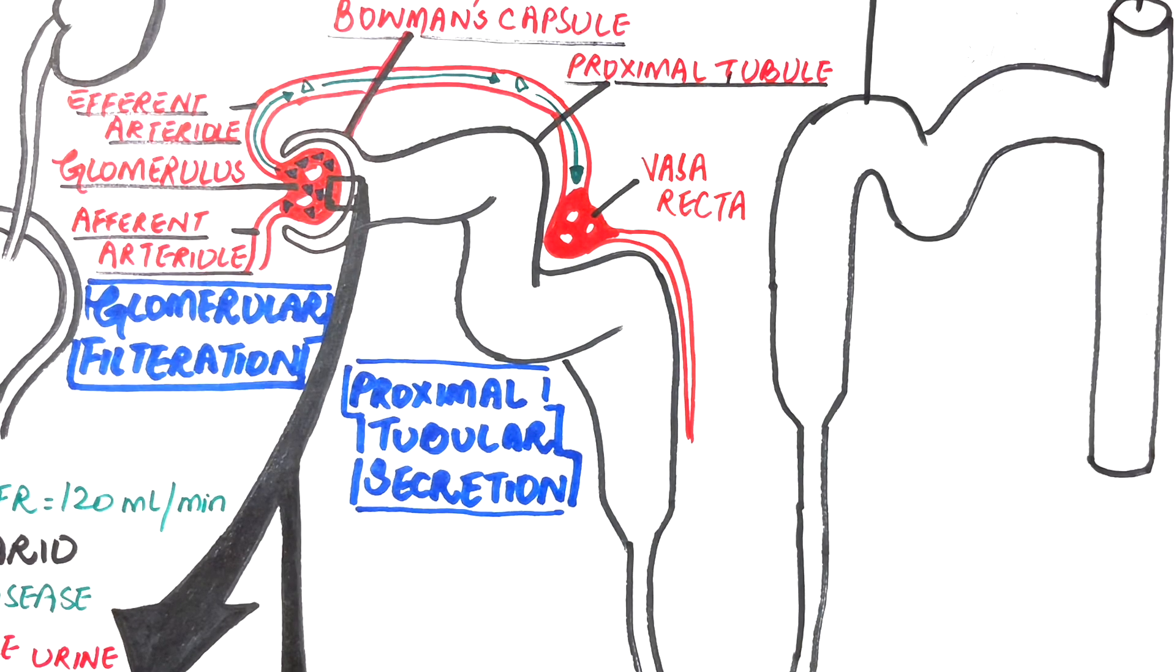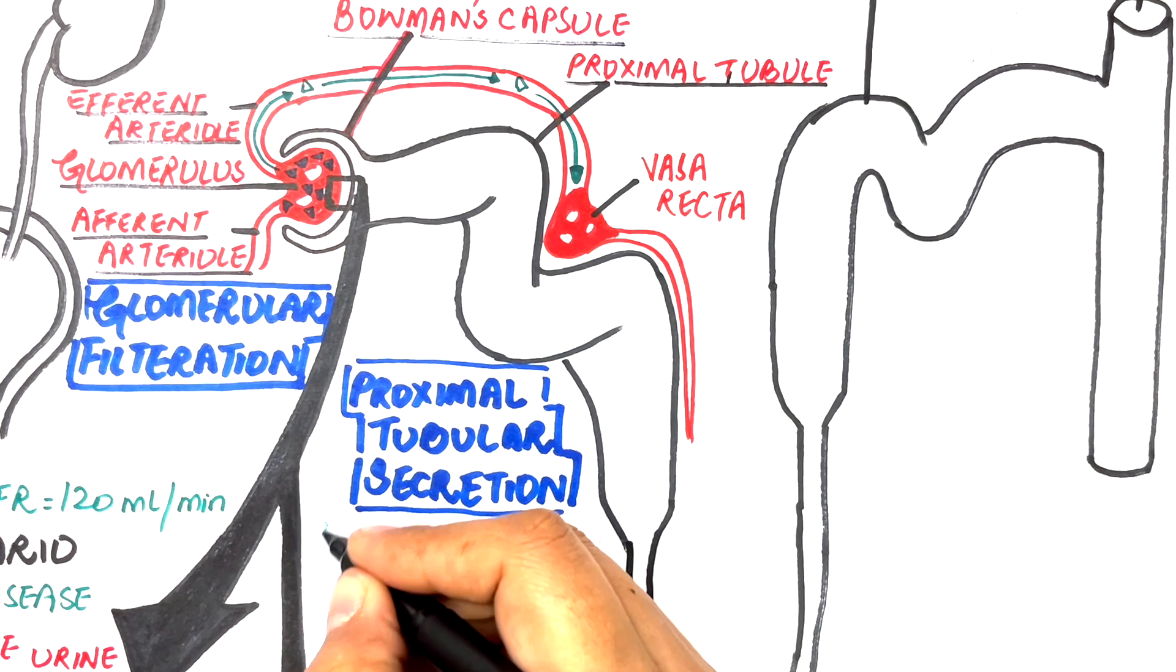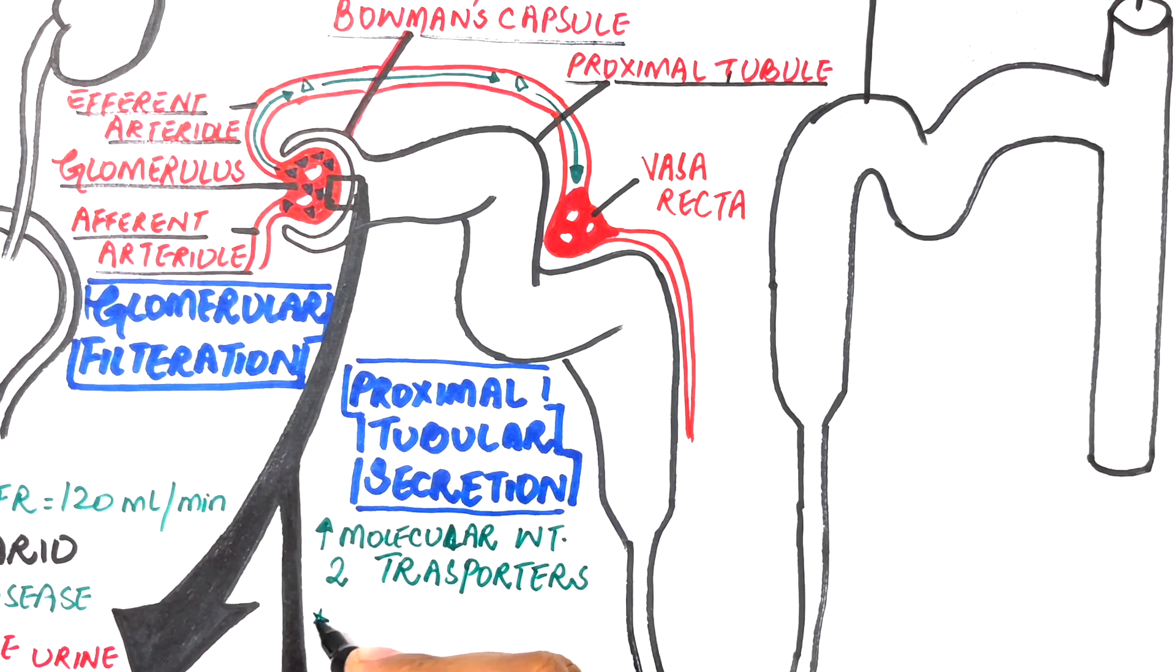Since this drug has a high molecular weight, the drug cannot secrete passively into the tubules out of the capillaries. The secretion of such a drug requires energy consumption in the form of ATP, so that it actively secretes into the lumen against its concentration gradient. For this exact purpose, two transporters are present here, named as the organic anionic transporter and the organic cationic transporter.